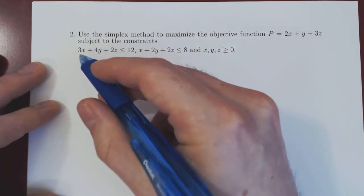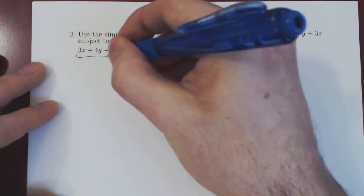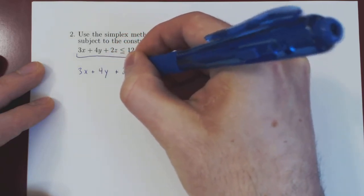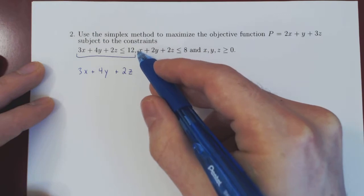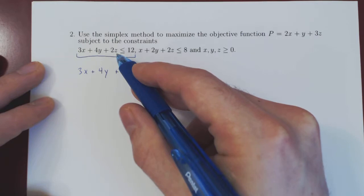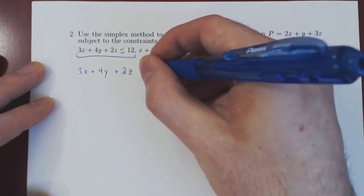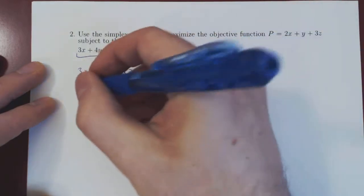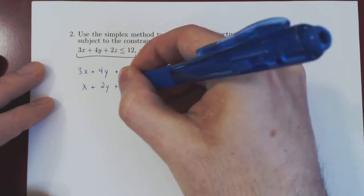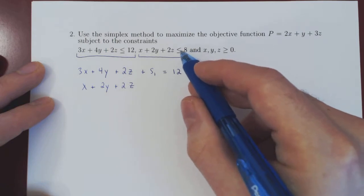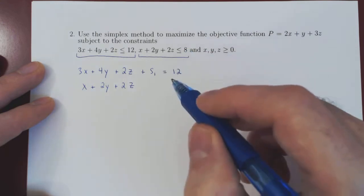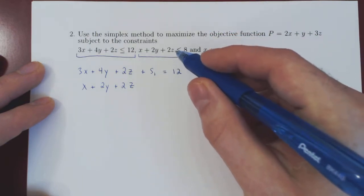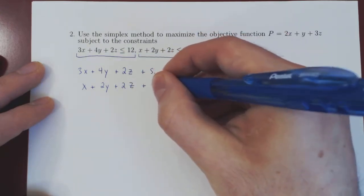The first step as always is to transform the inequalities into equalities with the help of our slack variables. So here we have 3x plus 4y plus 2z, and this is at most 12. If we add just the right amount — say s1 — to the left-hand side, we'll attain exactly 12. For the second inequality, x plus 2y plus 2z is at most 8. If we add to the left-hand side just the right amount, it will equal 8. The amount may differ, so we add a second slack variable.